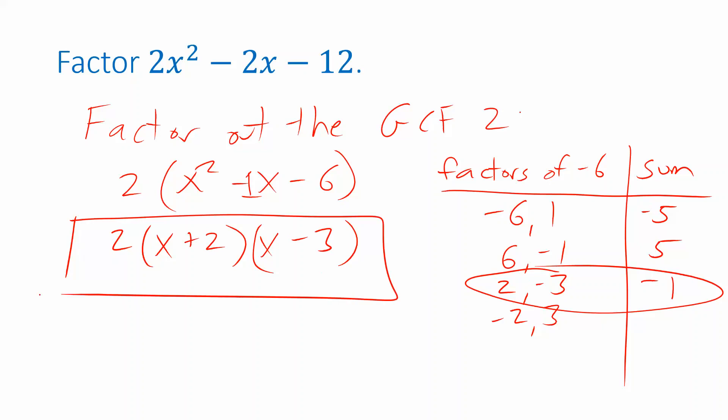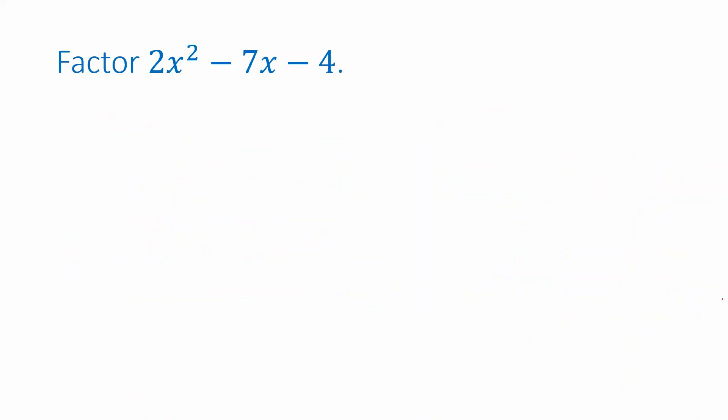So the factored form is 2 times (x + 2)(x − 3). We can see that if it's possible to factor out a GCF and leave behind a monic polynomial, that's the approach to take. But that's not always going to work. For example, factoring 2x squared minus 7x minus 4 — the greatest common factor for those terms is 1. You can't pull out a 2 because negative 7 is not a multiple of 2, so we need a different approach.